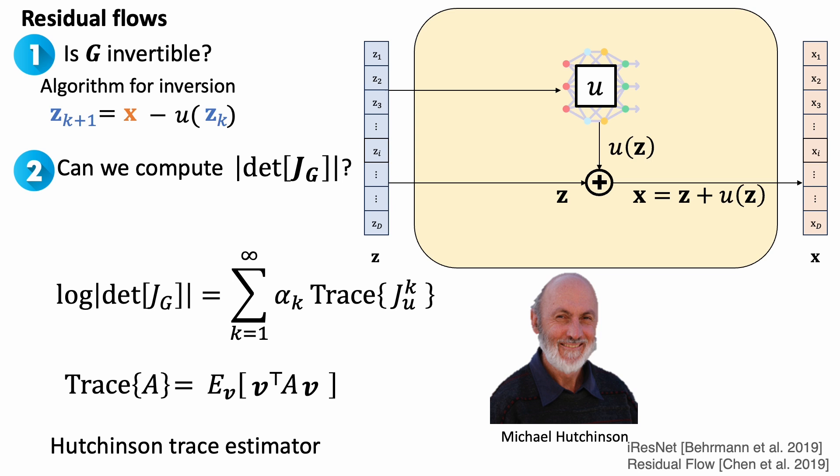But then, we cannot evaluate the infinite terms. The residual flow paper showcases the trick to compute unbiased estimate by rewriting the sample finite terms. Next, we will see how we can generalize the residual flow ideas to continuous normalizing flows.